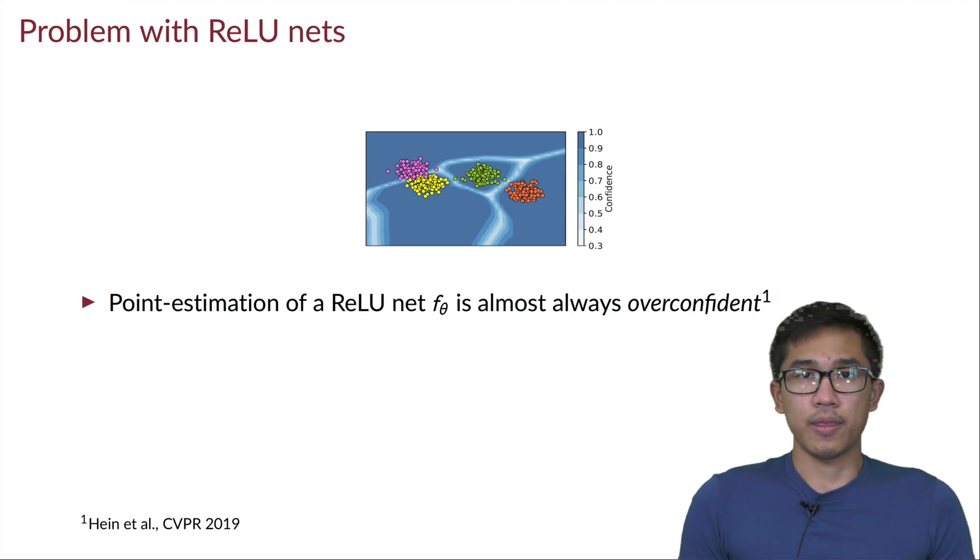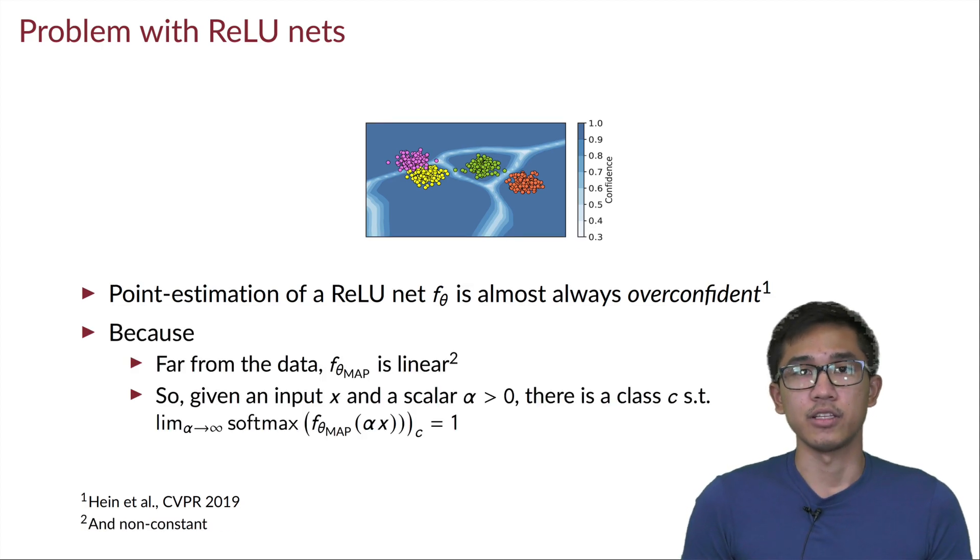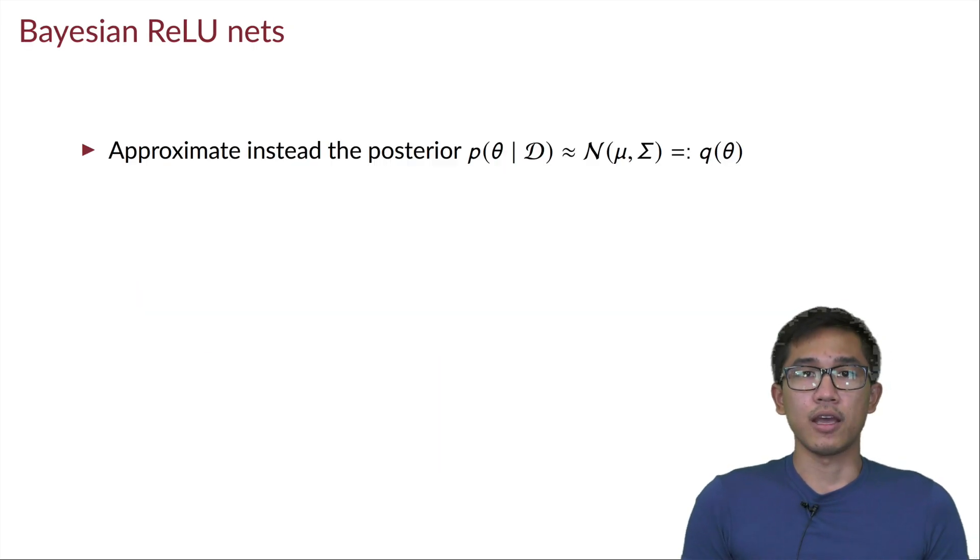This is just a point estimation, so we can show that far away from the training data, this network will yield an overconfident prediction. And this is because far away from the training data, the network is just a linear function. And when we have an input x and we scale it with some scalar α and we take the limit of α tends to infinity, the softmax output of the network will tend to the one-hot vector, meaning that we will always be overconfident.